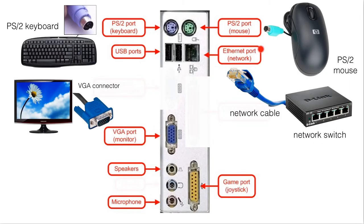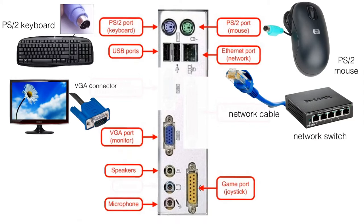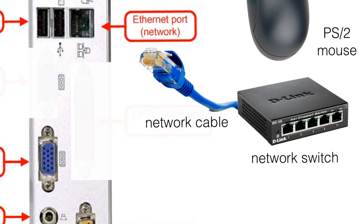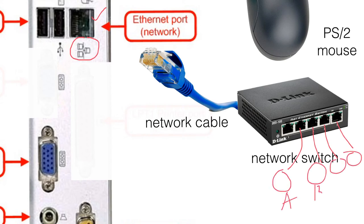Next we have the Ethernet port or the network port. As the name implies, the Ethernet port is used to connect the computer through a network switch. We can observe from the icon here — this represents a network icon, meaning that this port is used for connecting the computer to a network. This network switch can be connected to other computers, and they will form a network.